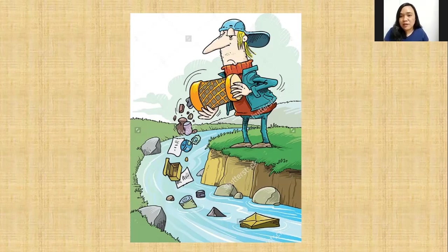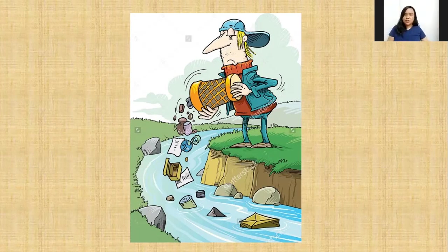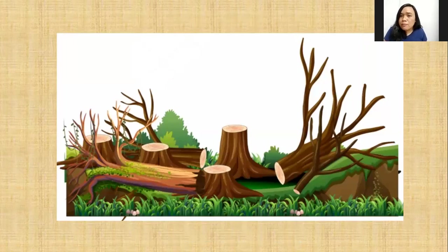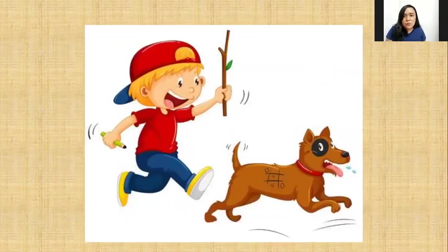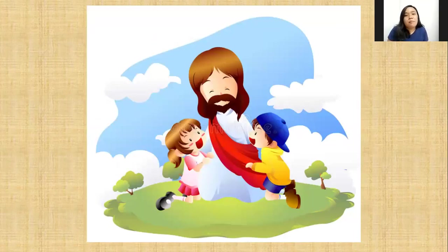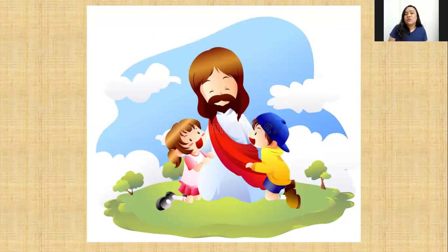Now we have learned about the hayop, the puno, and the bulaklak. Teacher Meg wants to ask you: what is the man doing in the picture? Yes, he's throwing garbage — in Tagalog we say 'nagtatapon ng basura.' Do you think it's a good action or a bad action? You are right, it is not a good action. Look at this picture — the puno and the bulaklak have been cut down. And look at that poor hayop — why is he running away? Because the boy wants to hurt him. Oh no! Jesus made the beautiful bulaklak, the tall and strong puno, and the cute hayop for all of us to enjoy.